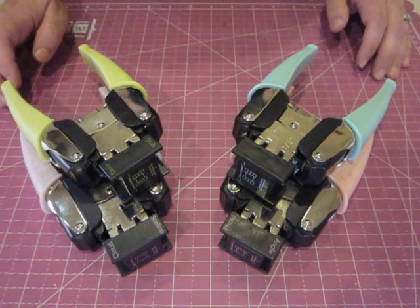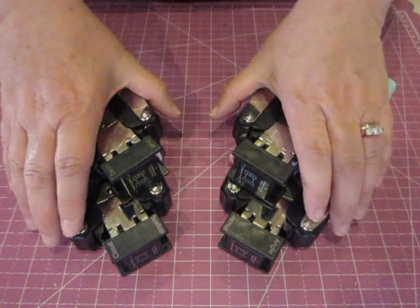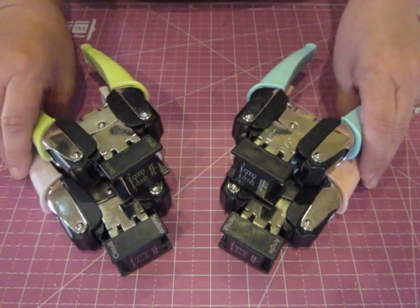Hi, my name is Ann Corbier-Scott and I'm with the We Are Memory Keepers design team. Today I want to spread the love for the Corner Chomper.